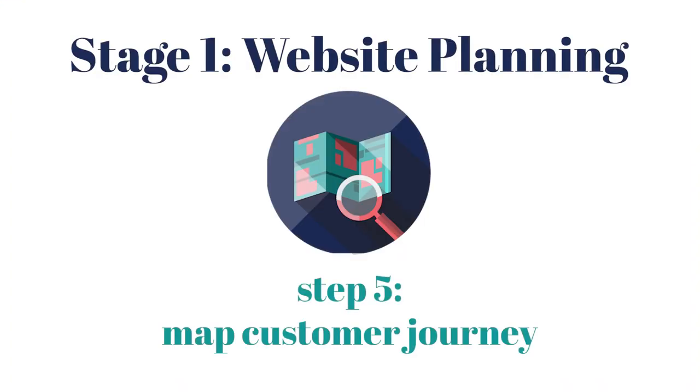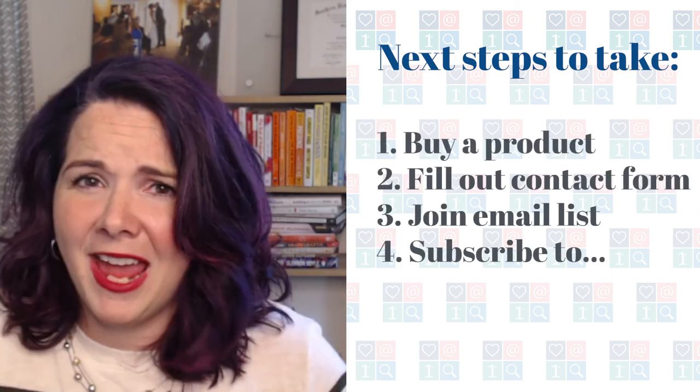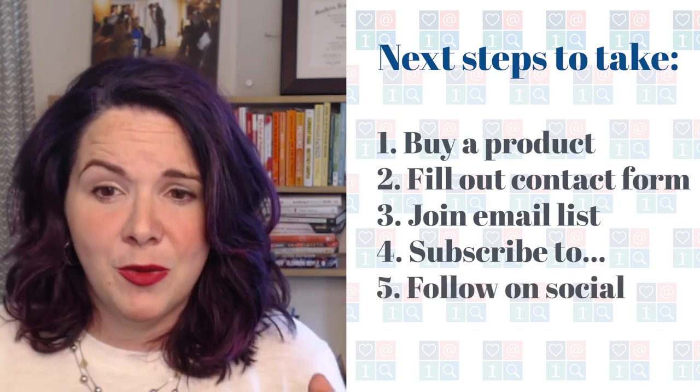The final step — step five of our planning phase — is mapping out your customer journey. We don't just want people to come to the website, think that's cool, and then leave. We want to give them a next step to take. Depending on your business model and goals, that next step may be buying a product, filling out a contact form, joining your email list, subscribing to your podcast, or following you on social media. I'd put those in that order of priority. Then start thinking about what comes next after they take that step: if they fill out the contact form, what's the reply going to be? If they buy a product, what's your delivery mechanism? If they join your email list, where are you collecting that email address? Just think about — when people find me, what do I want them to do? And that's the end of stage one: planning your website.